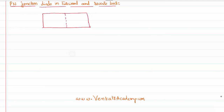From one side we start adding a trivalent impurity, therefore this side starts becoming a P type material. From the other side we start adding a pentavalent impurity, therefore that starts becoming an N type material. This is called doping, which makes the extrinsic semiconducting material. This side will behave like a P type with majority carriers of holes, and the N type with majority carriers of electrons.